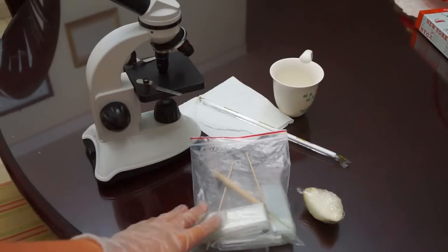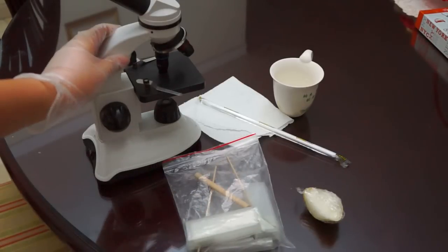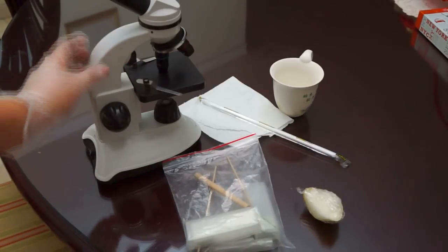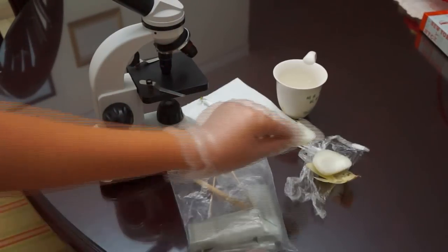For this experiment we need an onion, tools such as cover slips and slides, a microscope to make our experiment, towels, straw or dropper and water.